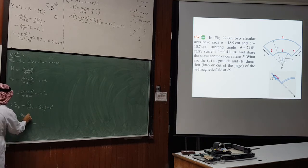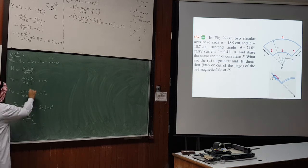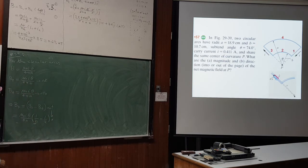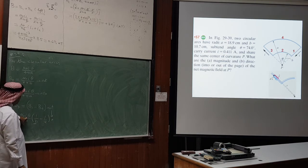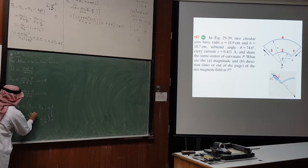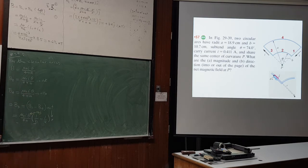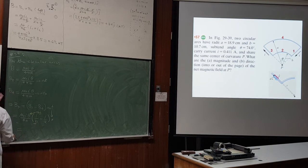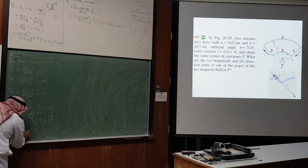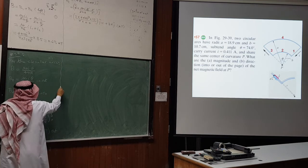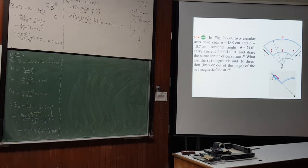The net magnetic field is B = μ₀Iθ / (4π) × (1/b − 1/a), directed out of the page. Converting θ = 74° to radians and substituting all values gives a net magnetic field of 0.215 microtesla, directed out of the page.